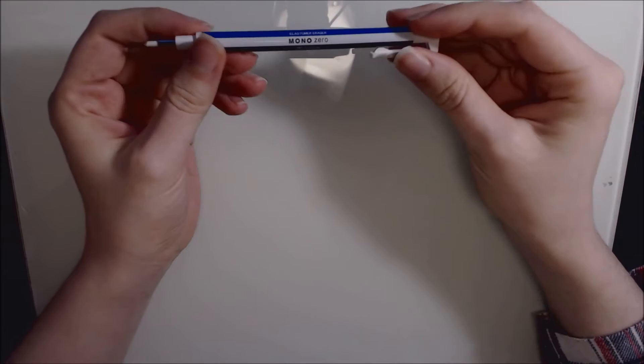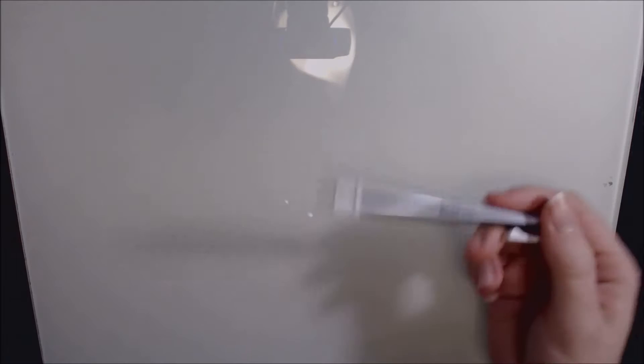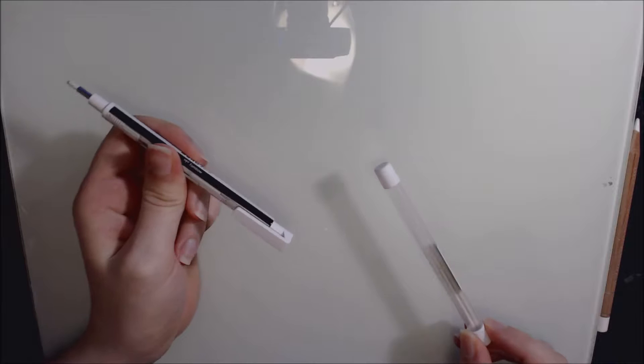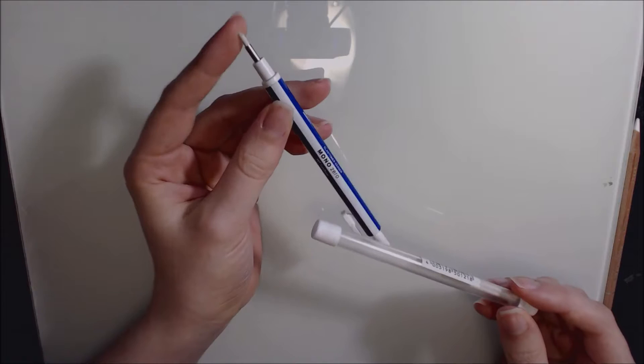My next favourite is the Tombow Mono eraser. This is the 2.3 millimetre size. This is perfect for using to erase really fine small areas like highlights, whiskers, cleaning up edges, that sort of thing. I rarely do a portrait or pencil piece without using one of these. I also have two refills. I received this as a present in July or August around the time of my birthday. And I haven't even used up the first eraser in it. It definitely lasts for quite a long time if you use it carefully. You certainly don't want to be using it to erase large areas.